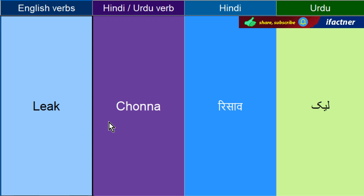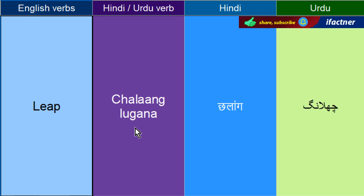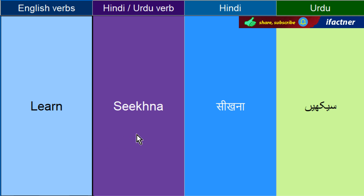The oil is leaking in my car — meri gaadi mein tail chow raha hai. Jo dubla patla ho usko bhi Lean ka jata hai, lekin jab jhukne ko hum Lean kehtay hai. Chalang lagana — Leap. A cheetah can leap up to twenty feet — ke ek cheetah bees foot tak chalang laga sakta hai. Seekhna — Learn. You are learning to speak English — aap Angrazi bolna seekh rahay hain.